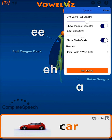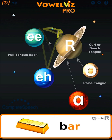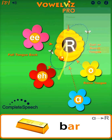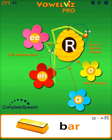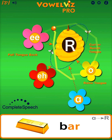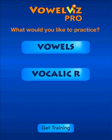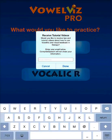Also, just as in VowelViz, there are additional themes that you can use with your clients. These themes make therapy more fun and engaging and help students want to play and practice their R sounds. When you're done or if you want to change what Vocalic R you're working on, you can use the back button in the top right corner to go back to the word list selection page and back to the home screen. On the home screen, you can use the Get Training button to register your email address and receive tutorials via email. I hope this is helpful. Look for our other upcoming tutorials about vowels and Vocalic R.